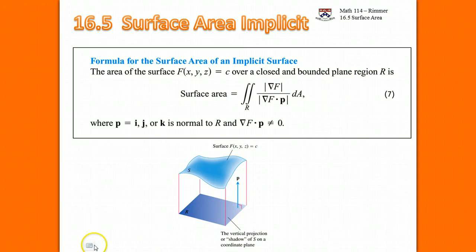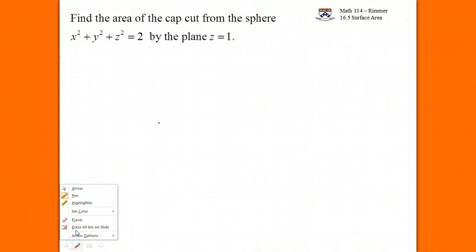Okay, so let's see an example. We have find the area cut from the sphere x squared plus y squared plus z squared equals 2 by the plane z equals 1. So we have this plane z equals 1 and we cut from it. We cut from the plane the top part and we want to find the area, surface area of the top part, the sphere.